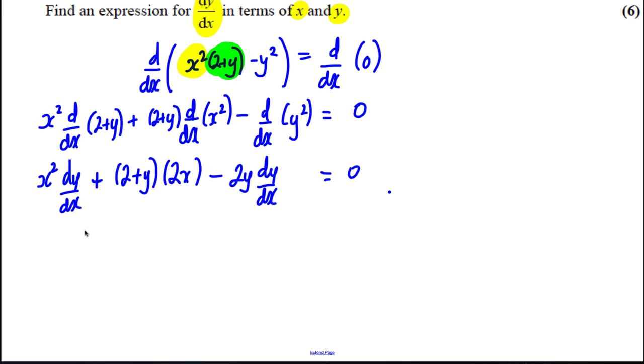So what we're going to do is say how many dy by dx's have we got. We've got x squared subtract 2y lots of dy dx, and that's going to be equal to, if I subtract this from the other side, negative 2x times 2 plus y. So dy dx is clearly going to be equal to negative 2x times 2 plus y all divided by